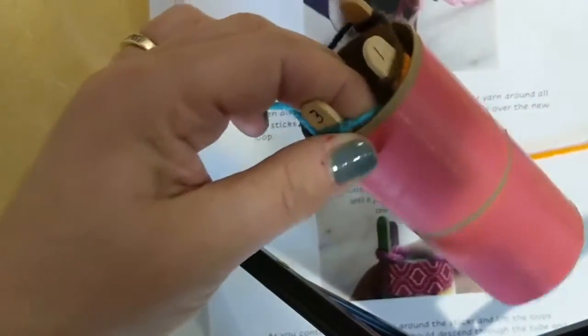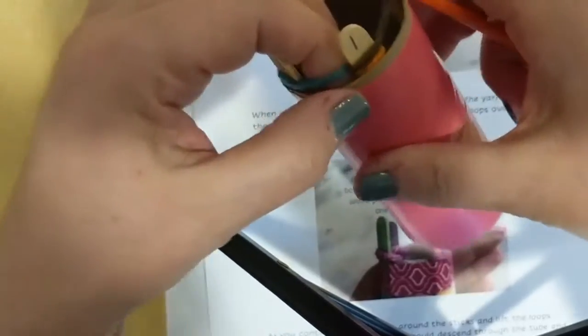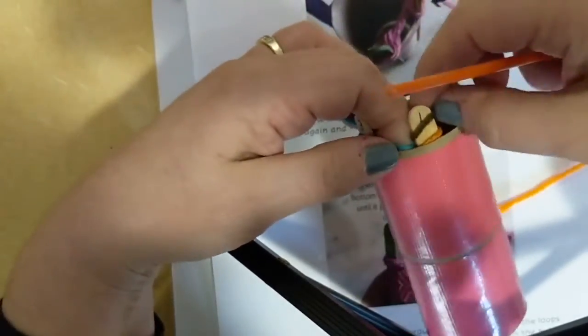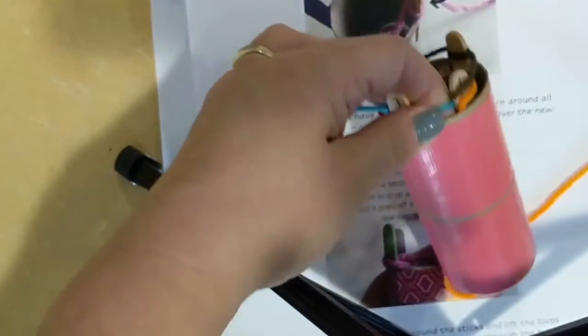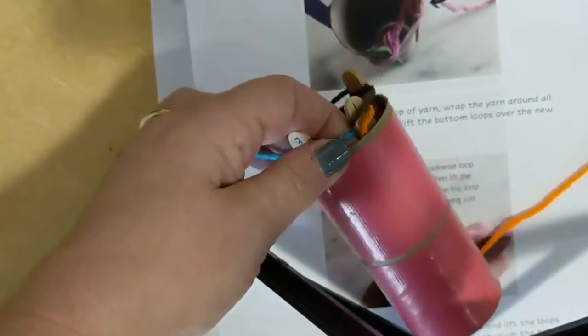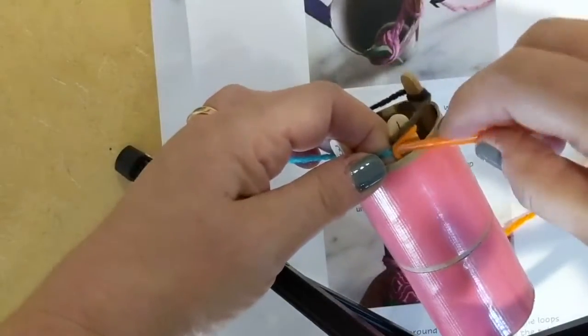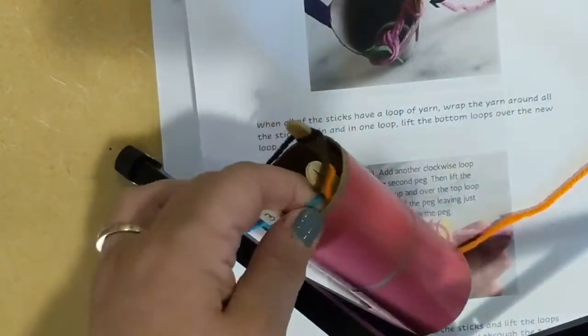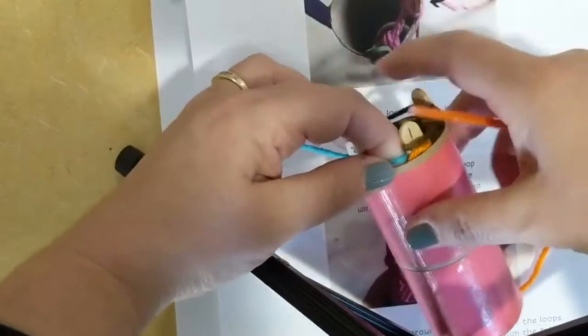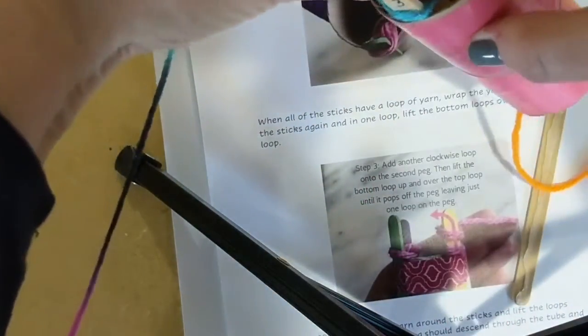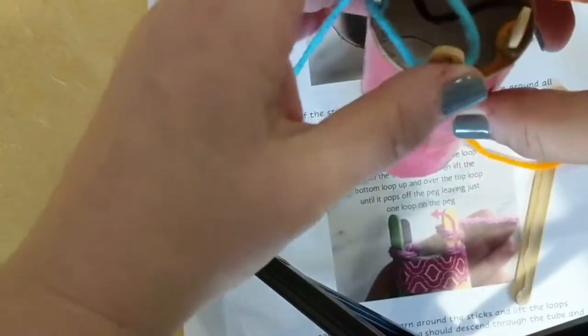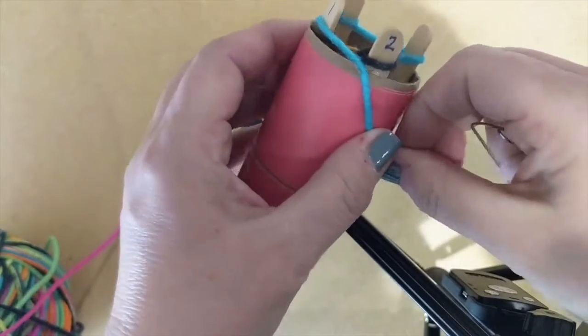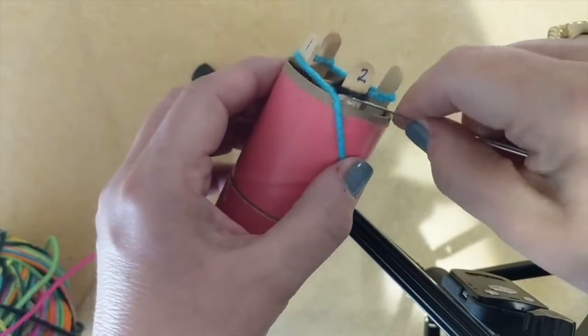And now here's the easy part. So if you remember, we went back to the beginning and we're going to grab, you have a little tool in your kit. It's specifically for spool knitting. It looks like a sort of like a crochet hook, but a wire. So now what we're going to lift the bottom. So as I was saying, we were lifting the bottom over the top.